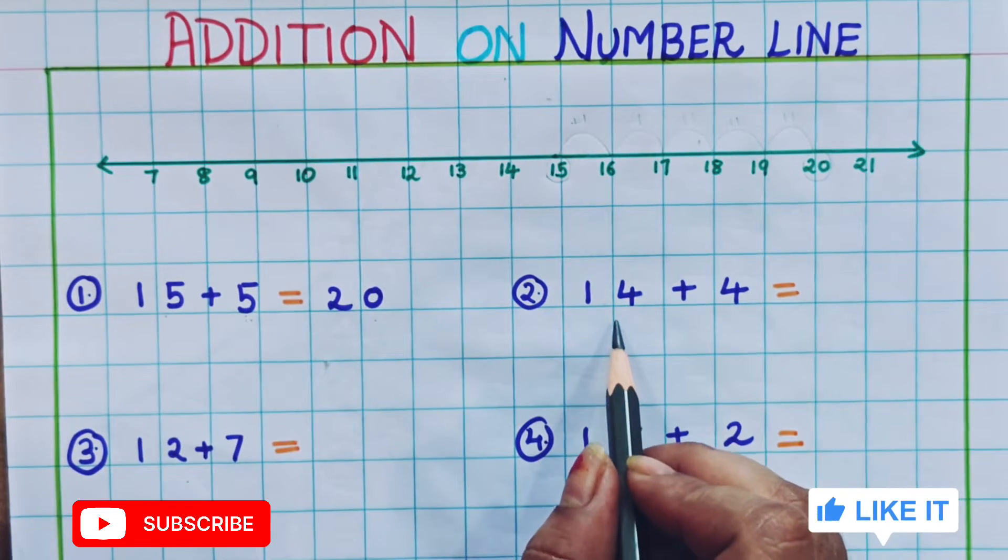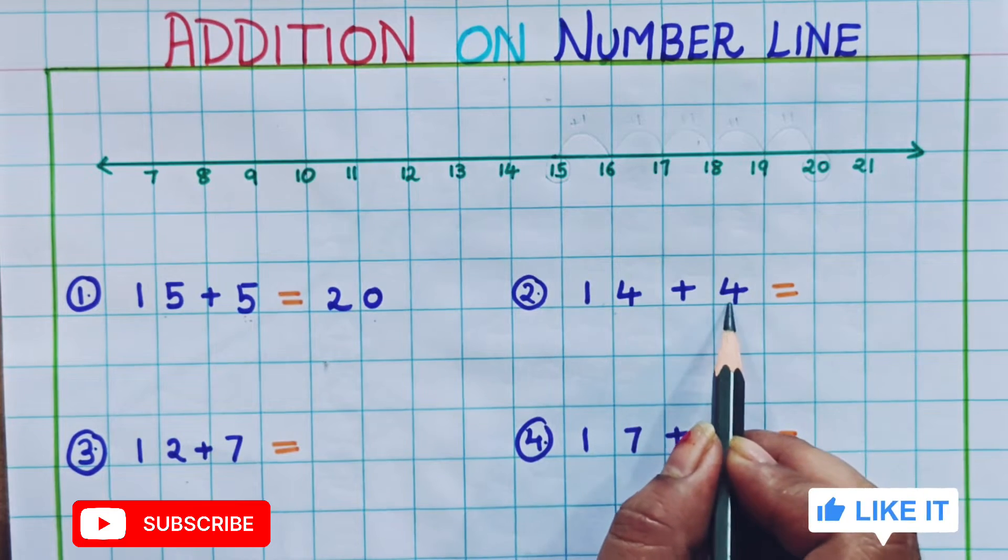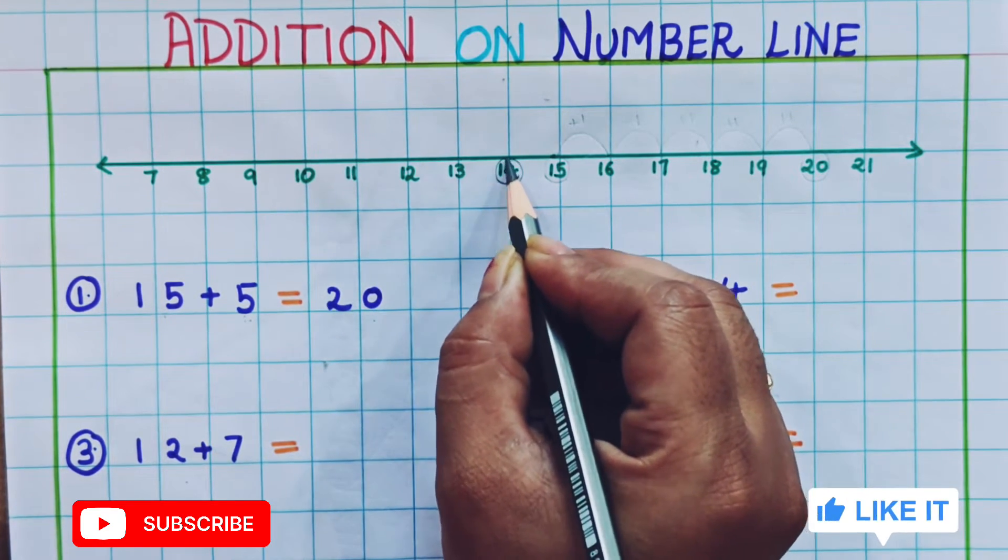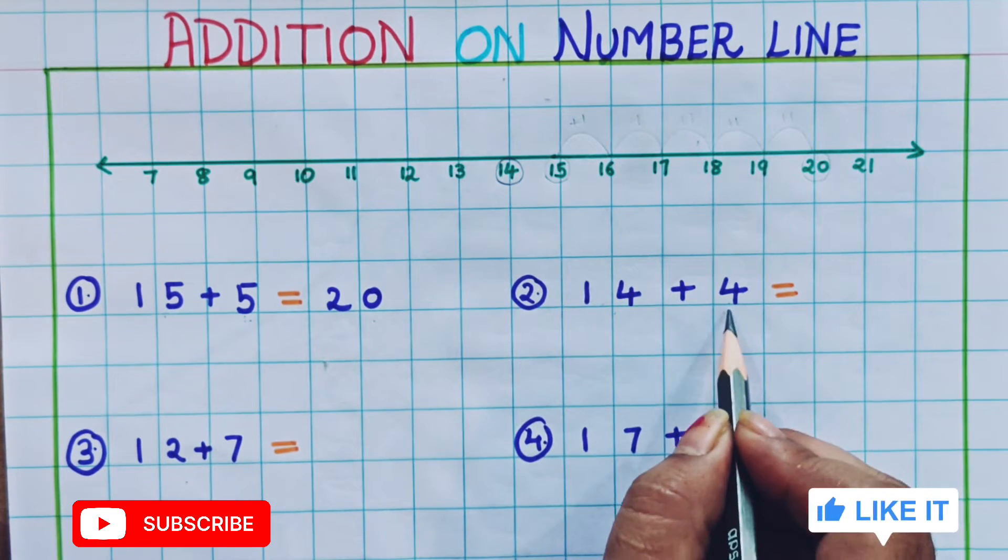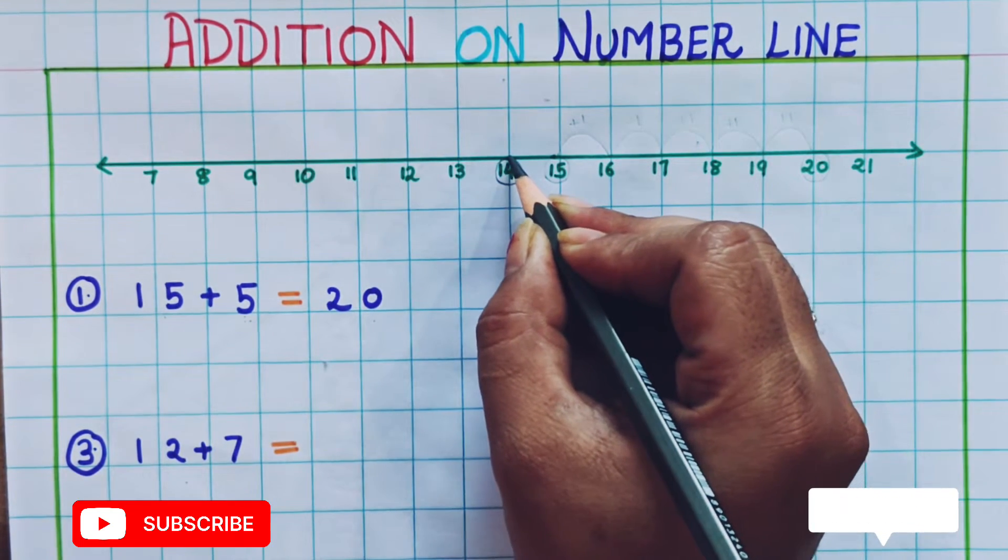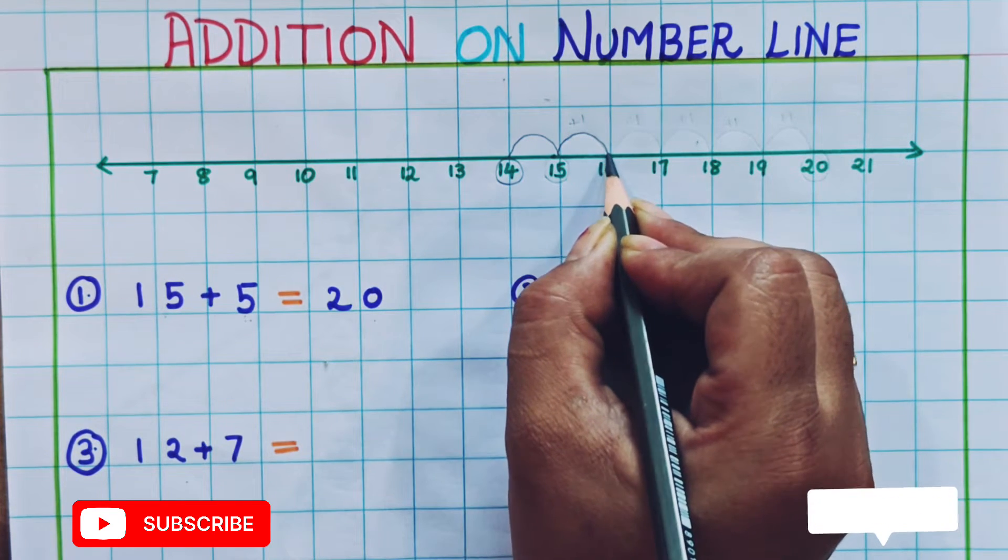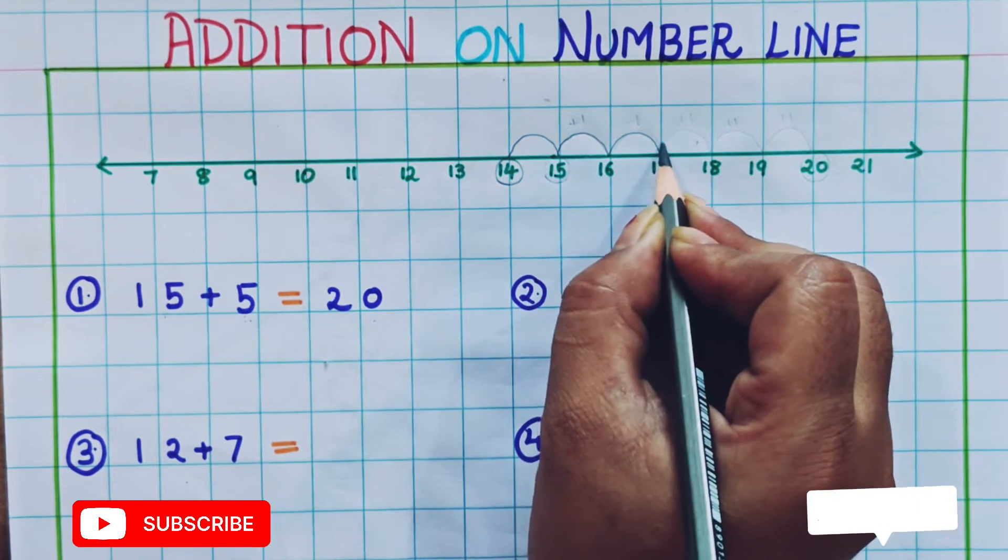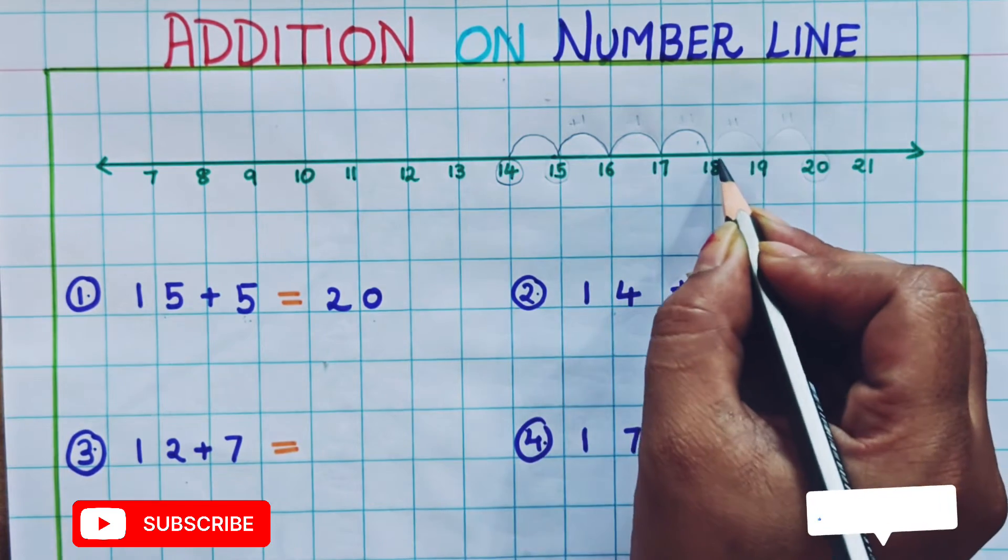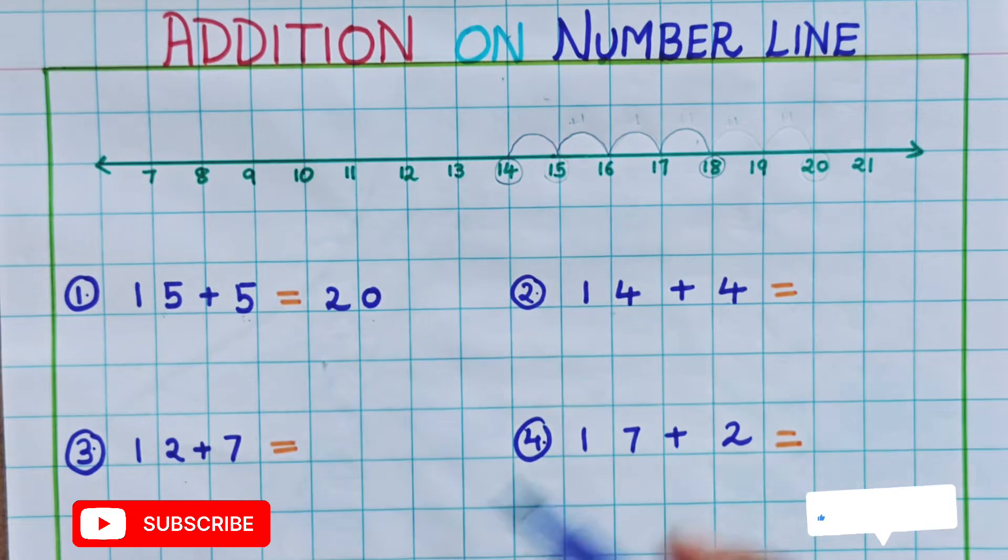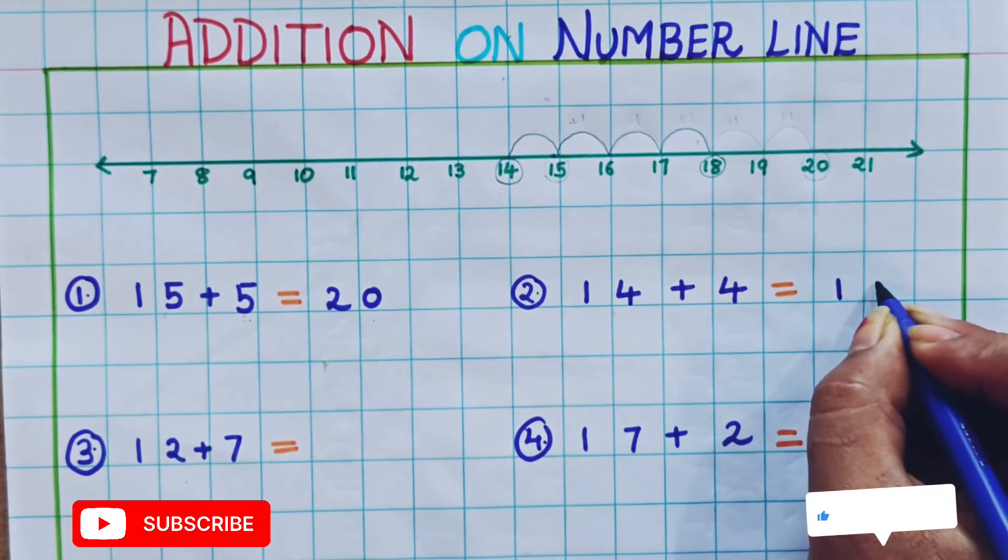Now let's see the next problem. 14 plus 4. So first we are going to look at 14. Here this is 14. Now plus 4. We have to go 4 places forward. So how will we go? 1, 2, 3 and 4. So what number are we getting? 18. So what is the answer of 14 plus 4? The answer is 18.